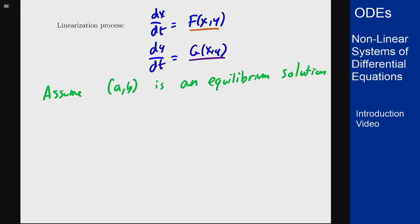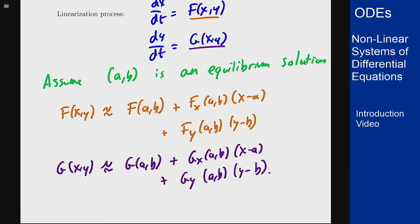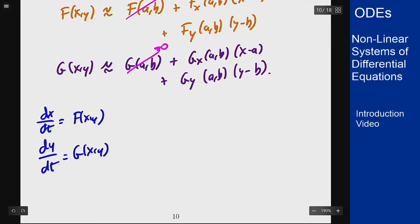You can see this as a tangent plane or multi-variable Taylor series expansion. The function f(x,y) can be approximated by f(a,b) + ∂f/∂x|(a,b)·(x-a) + ∂f/∂y|(a,b)·(y-b), plus higher order terms that are of order squared, and similarly for g. Because we have an equilibrium solution, we know both f(a,b) and g(a,b) are zero. So I can approximate the system by replacing it with these approximations. dx/dt = fₓ(a,b)·(x-a) + f_y(a,b)·(y-b), and same for y.